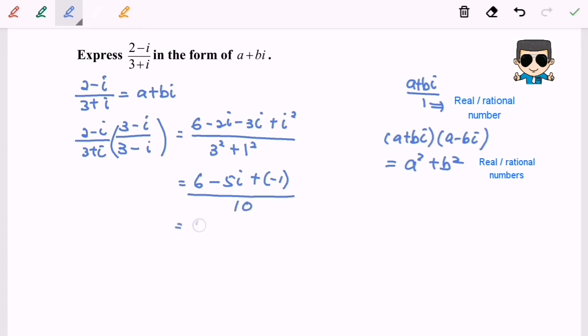So 5 over 10 minus 5i over 10. So finally, 1 over 2 minus i over 2.